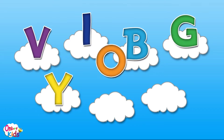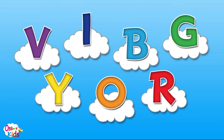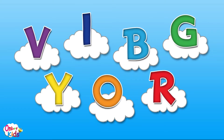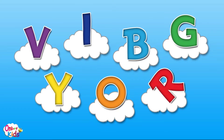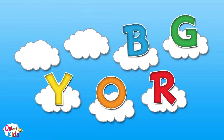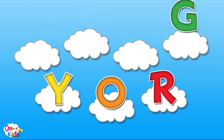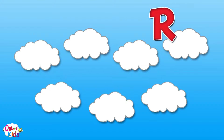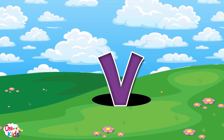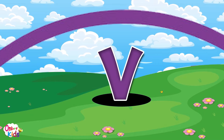V, I, B, G, Y, O, R. V, I, B, G, Y, O, R. V, I, B, G, Y, O, R. These are the colors of the rainbow — V for violet,